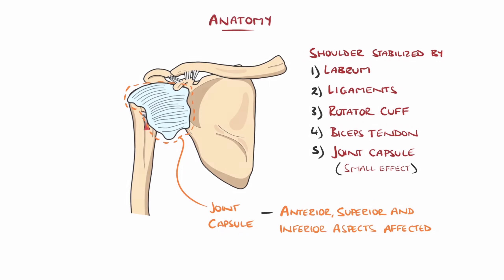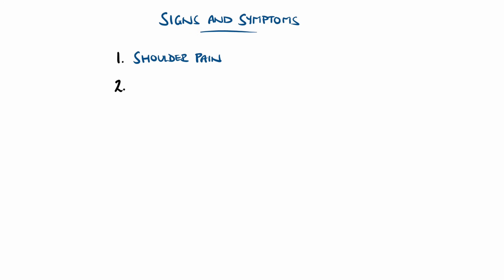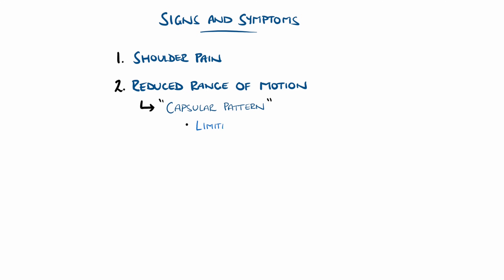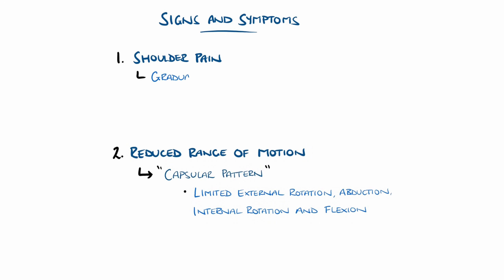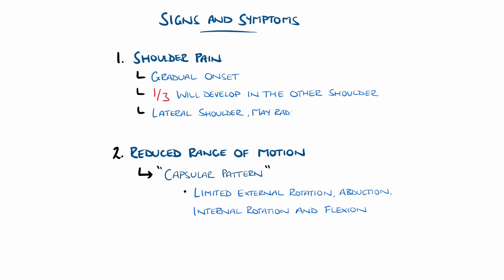The typical features are a gradual onset of shoulder pain and reduction in active and passive range of motion, particularly in a so-called capsular pattern: limited passive external rotation, abduction, internal rotation, and flexion, in that order, though debate exists regarding this capsular pattern. It is usually on one side, though in up to one in three people it will develop in the other side at some stage. The pain is often felt in the lateral part of the shoulder, has a dull character with gradual onset, and may radiate to the biceps.